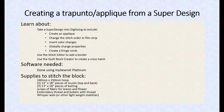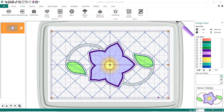You could do some of these steps using the older software, you just wouldn't have this particular design. To stitch this out I'll do another video on actually stitching it out. You'll need a 240 by 150 hoop, two 13 by 18 inch pieces of muslin for the top and back, or you could use a cotton or linen. Two 13 by 18 inch pieces of batting, scraps of fabric for leaves and flower, embroidery thread, bobbin thread, Whisper Web or any other kind of lightweight stabilizer.